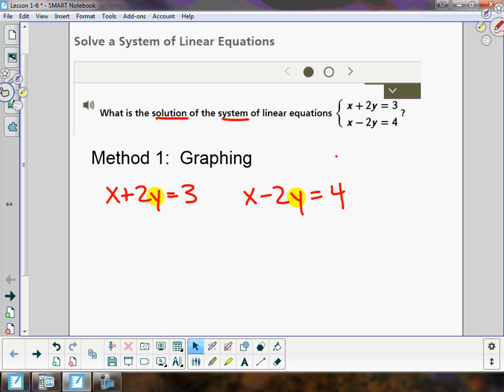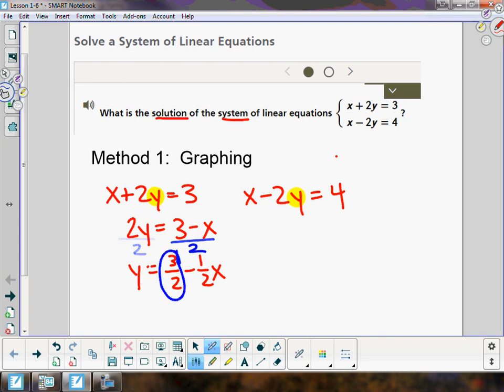In the first one, I'm going to take away x from both sides and then divide everything by 2. If I divide everything by 2 on both sides, it would look like that. On the right side, 3 divided by 2 is right here, and then we would have negative 1 divided by 2, producing the negative 1/2 x.